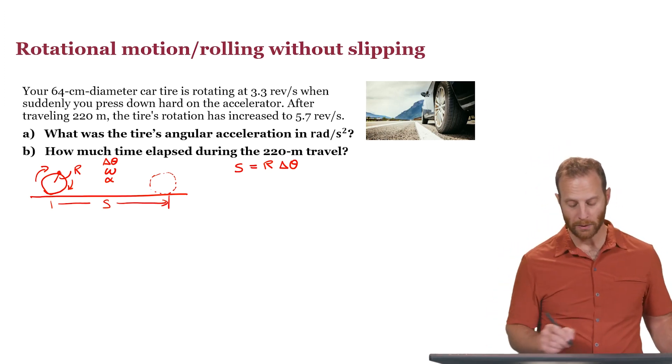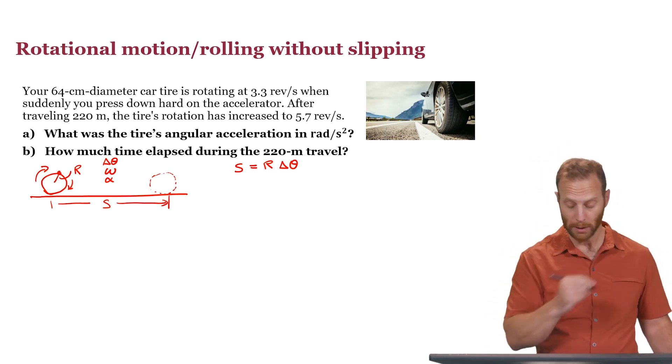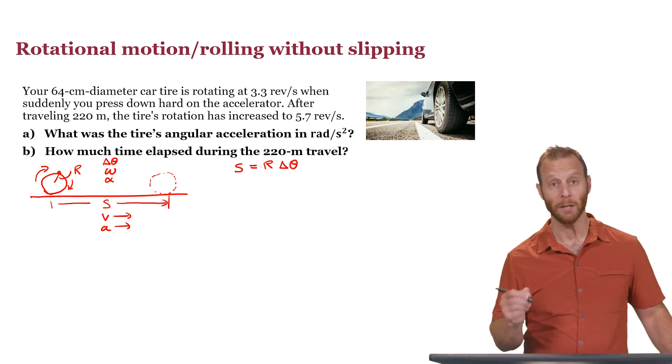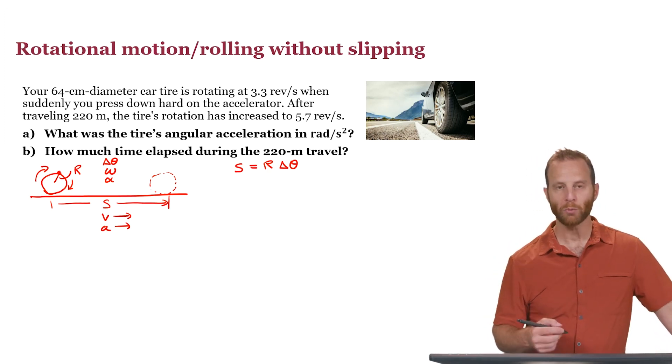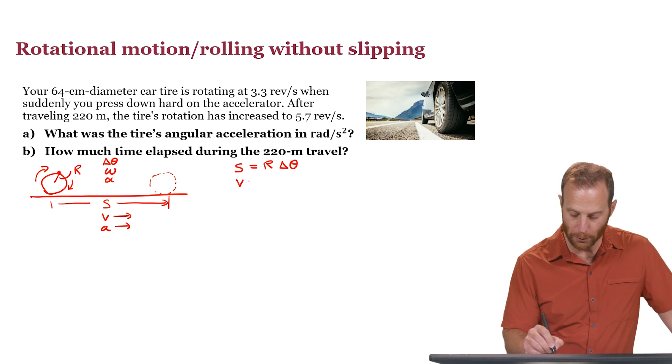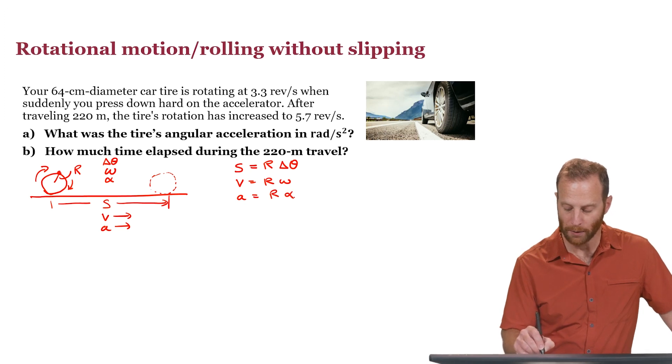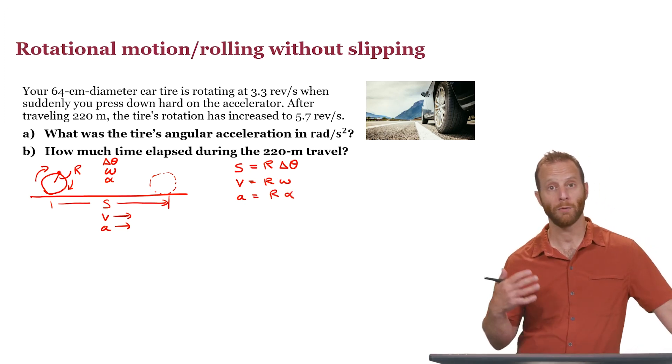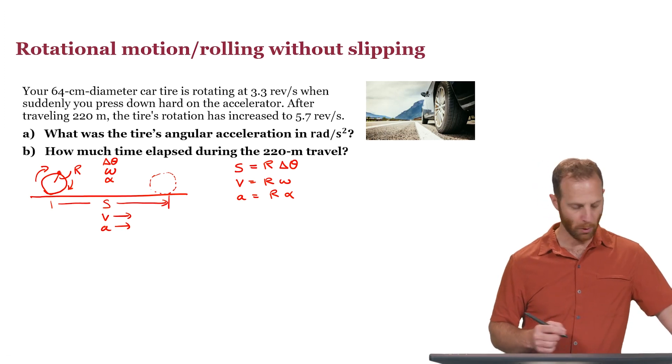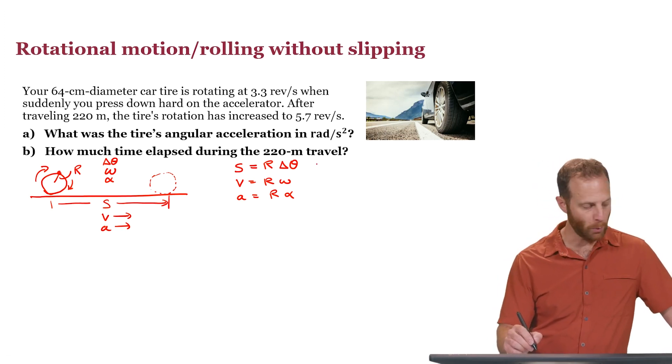Meanwhile, the wheel has had some linear displacement or linear change in position. It's had some linear velocity, and it has some linear acceleration. All three of the linear quantities are related to the angular quantities like this: the linear speed is equal to r omega, and the linear acceleration is equal to r alpha. Again, these apply when you have free rolling or rolling without slipping.